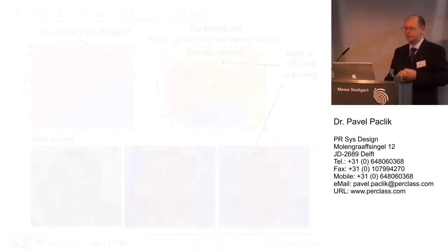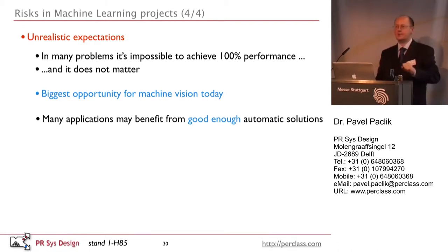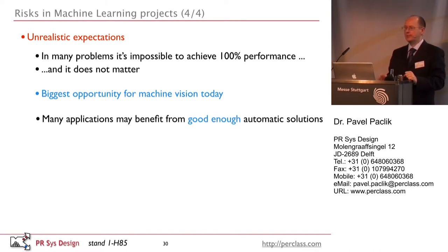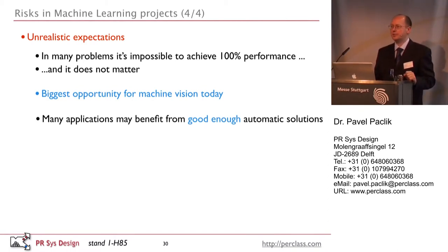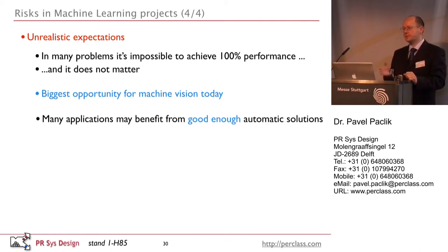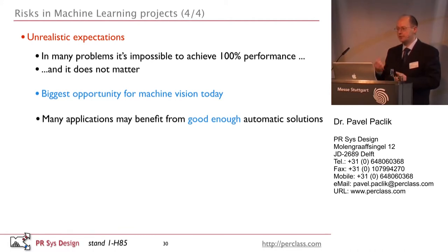It's also really important to have realistic expectations. System integrators often say: 'Academia achieves 95% performance, which is good enough for them, but we need 100%.' I would argue that many problems simply cannot achieve 100%, but that doesn't matter. No one claims to sort potatoes with 100% accuracy, yet we can all buy sorted potatoes in the supermarket. There is a clear business case. The biggest opportunity for industry is going to applications where good enough solutions exist — it's about finding what is good enough, not perfect solutions.